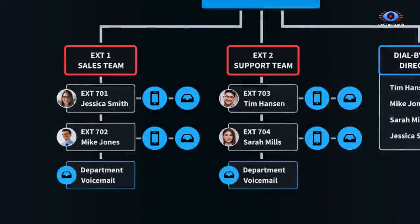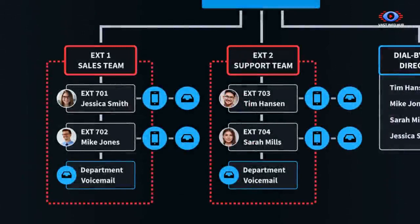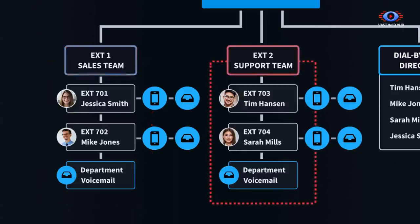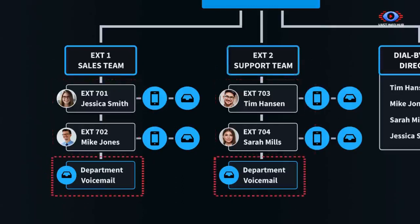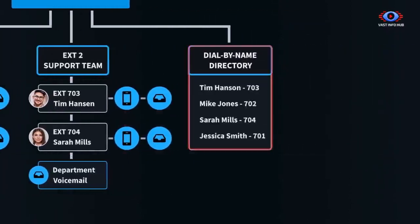Department extensions are simply groups of employee extensions. They're one digit each, zero through six. For example, you could designate extension 1 as your sales department and extension 2 as your support department. You also have the ability to customize the call forwarding and voicemail settings for each department extension. The dial-by-name directory allows callers to use their phone's dial pad to find an employee extension based on your employee's last name.